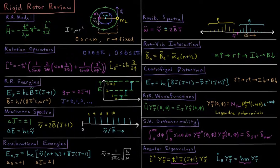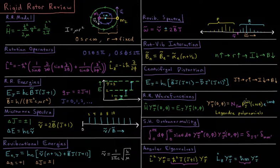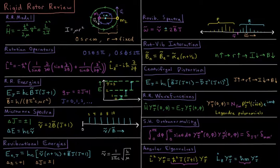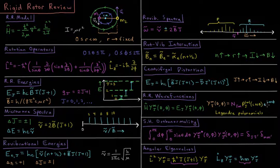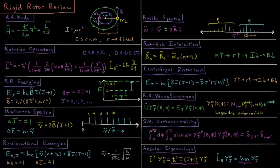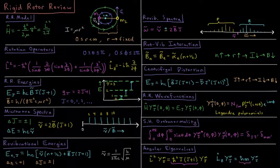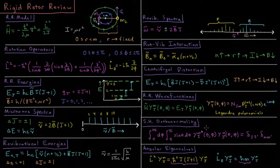The rigid rotor wave functions are the spherical harmonic functions, where H acting on our function gives E times our function. These spherical harmonics are a normalization constant times the Legendre polynomials of cosine theta, the polar angle, multiplied by a complex exponential in phi, e to the i·m·phi. The spherical harmonics are all orthonormal to one another: if they don't share the same quantum numbers j and m, integrating them gives zero, and if they have the same j and m, they give one.